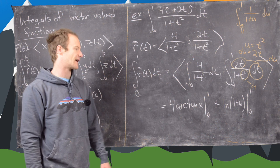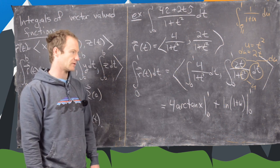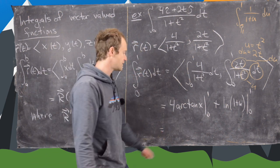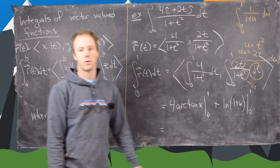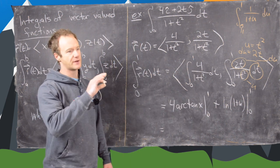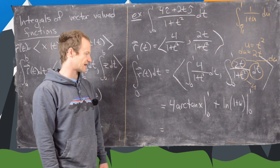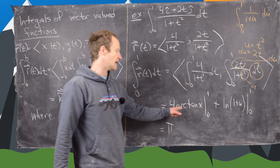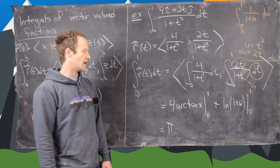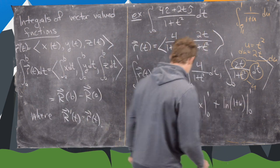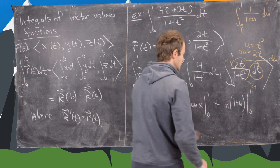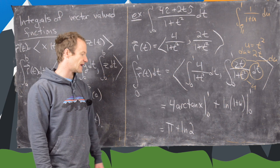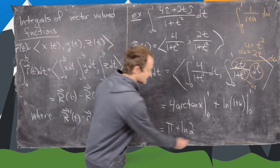We don't have to worry about an absolute value because everything we're plugging in gives a positive argument of the natural log. Now let's plug in values. The inverse tangent of 1 is pi over 4 — a 45 degree angle makes sine equal to cosine, that's how you can remember that — so 4 times pi over 4 is pi. The inverse tangent of 0 is 0. Then the natural log of 1 plus 1 is the natural log of 2, and the natural log of 1 is 0. So in the end we get pi plus the natural log of 2, and that's our final answer.